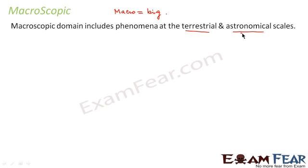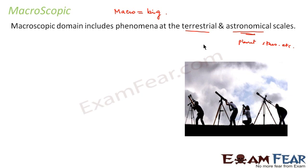Similarly, when I talk of astronomical scales, I talk of all the celestial bodies. For example, the planets, stars, etc. In the macroscopic domain, if you see, we are dealing with things which are very big in size.